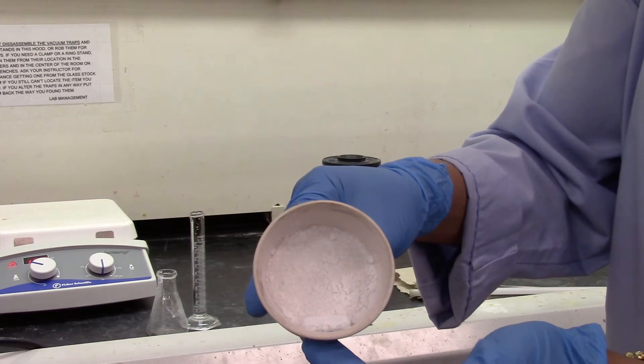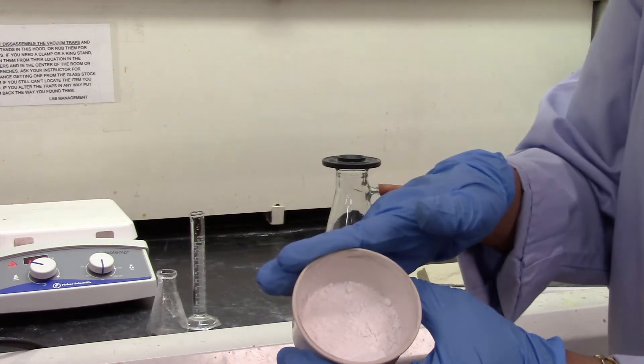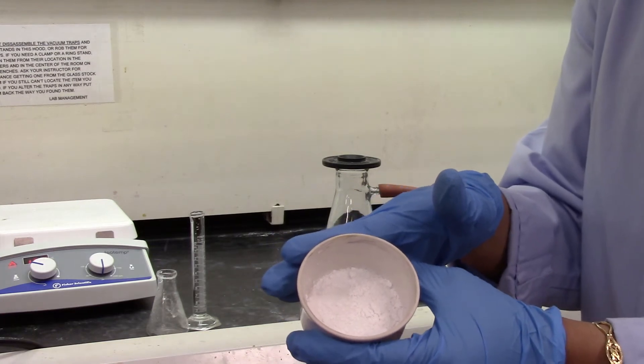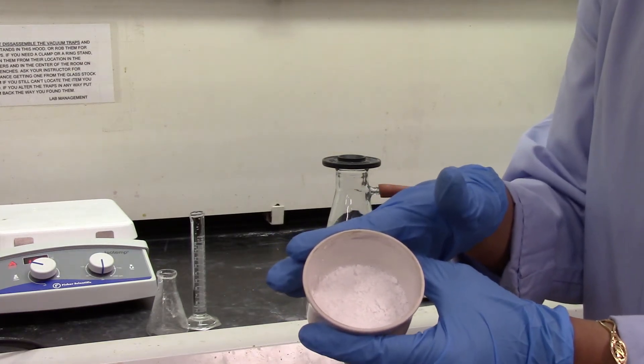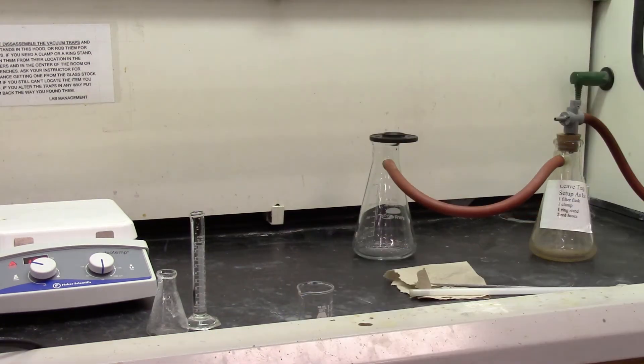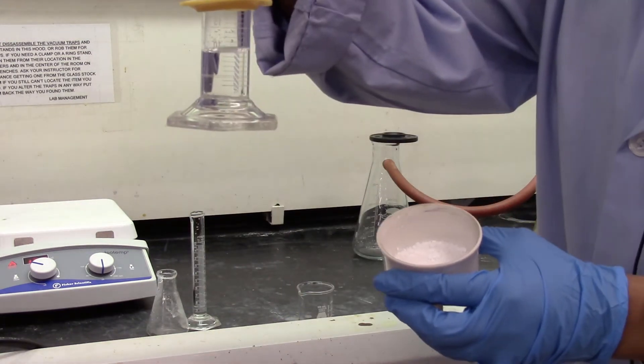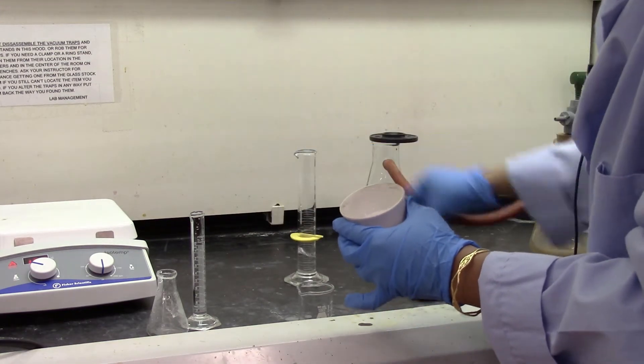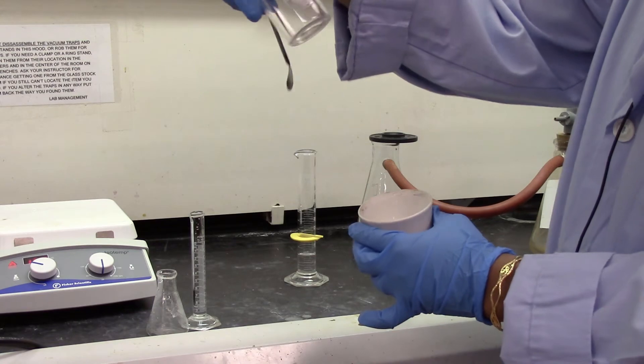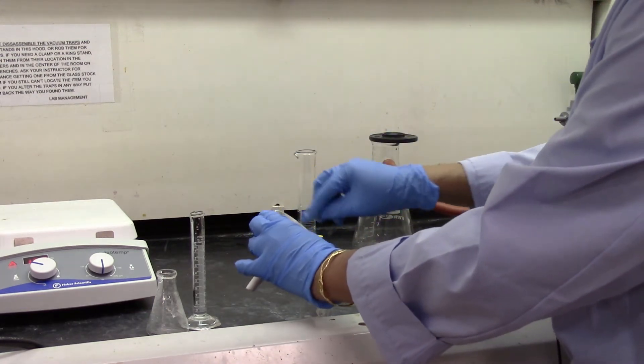And I still have the stir bar. I got to take it out. And I'm going to transfer this using about 10 ml of dichloromethane or methylene chloride. So here's my dichloromethane. And instead of an Erlenmeyer flask I am using a beaker. It's a 50 ml beaker. I'm going to transfer all my product in here.